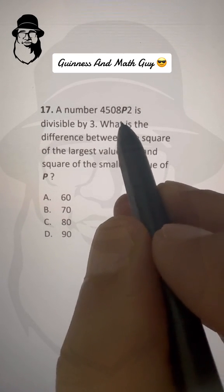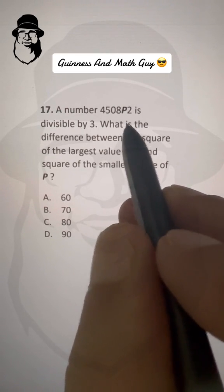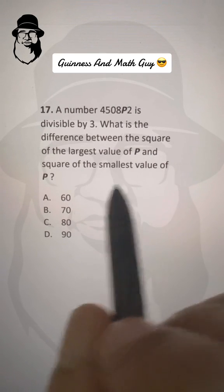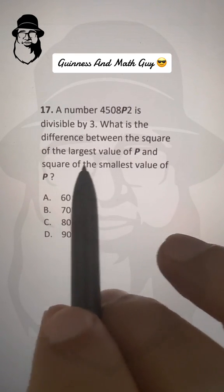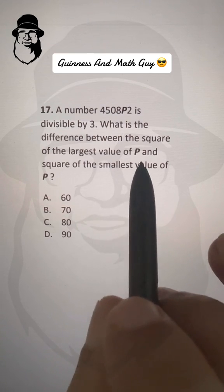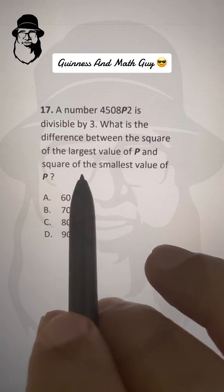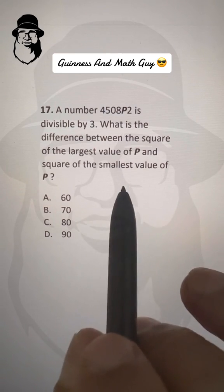A number 4508P2 is divisible by 3. What is the difference between the square of the largest possible value of P and the square of the smallest value of P?